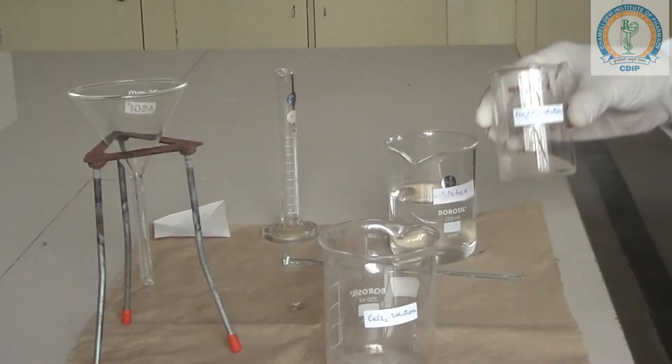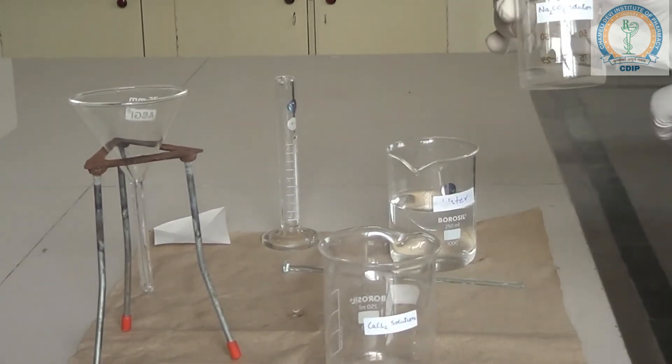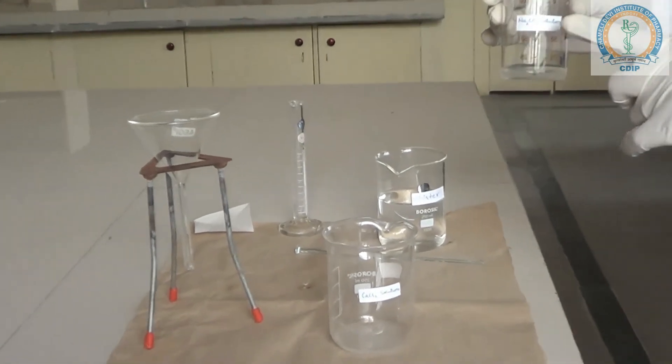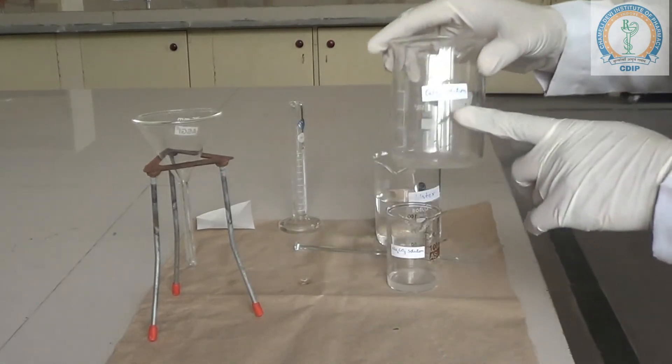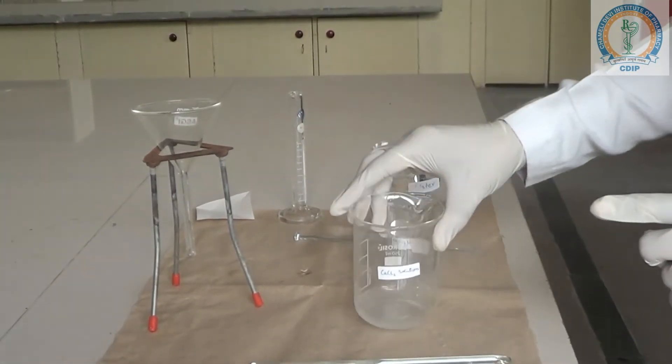Now, these are the different solutions: Na2CO3 solution, which we have prepared by adding Na2CO3 in distilled water, 10 ml. And this is the calcium chloride solution. Both the solutions are clear now, properly dissolved.